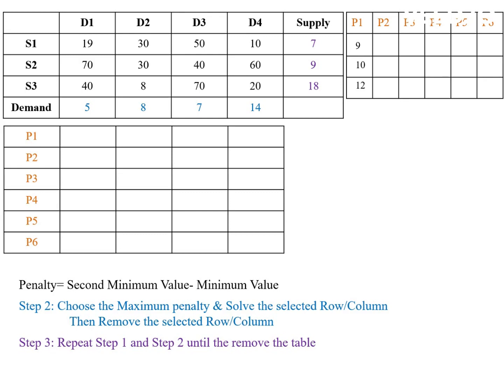Similarly, penalty for the D1 column is 40 minus 19, that is 21. For D2 column, it is 30 minus 8, that is 22. For D3 column, penalty is 50 minus 10, that is 10. For D4 column, penalty is 20 minus 10, that is 10.